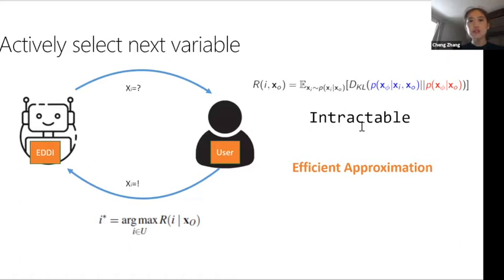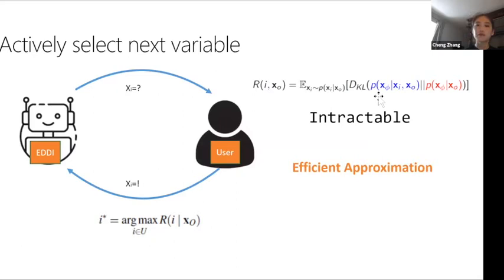We propose an efficient approximation using the chain rule of KL divergence. Instead of computing in X space involving X_phi and X_i, we convert to the latent Z space, breaking it down into two KL terms on Z space. We can share the same set of samples of X_i and X_phi, only needing to sample once. This makes the computation efficient and fast enough for real-time use.